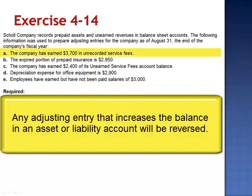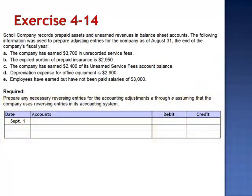Letter A: the company has earned $3,700 in unrecorded service fees. This is an accrual. On August 31st, the adjusting entry would have been a debit to accounts receivable and a credit to fees earned. Since this adjustment increases the value of an asset, we will reverse this adjusting entry on September 1st. The reversing entry is a debit to service fees earned and a credit to accounts receivable.